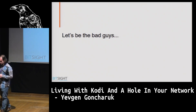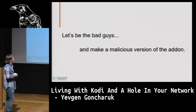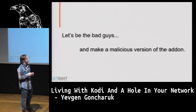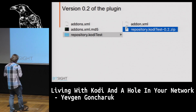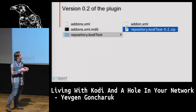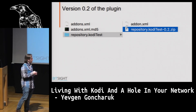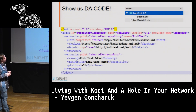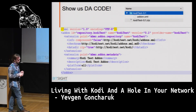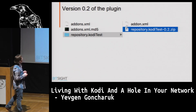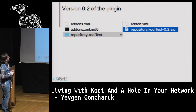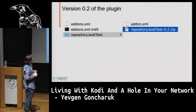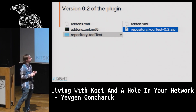Let's imagine a different case. Let's be the bad guys and make some very malicious code that will do some malicious stuff. To update something we will need a bit more. You need to have the add-ons XML file and the zip folder with the actual add-ons. And here we have addons.xml, addons.xml with MD5 — it's just MD5 of this file. And in this directory I have the zip of the actual add-on and the description of the add-on.